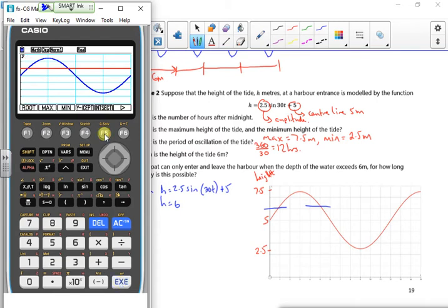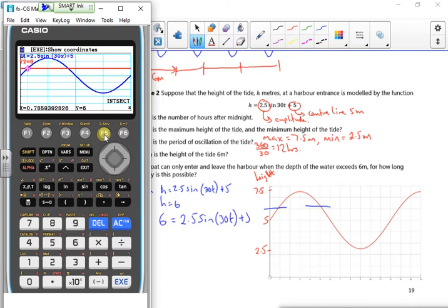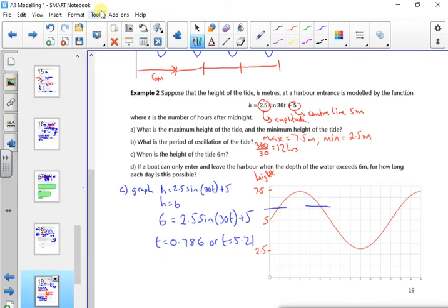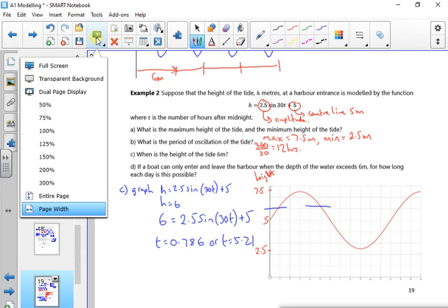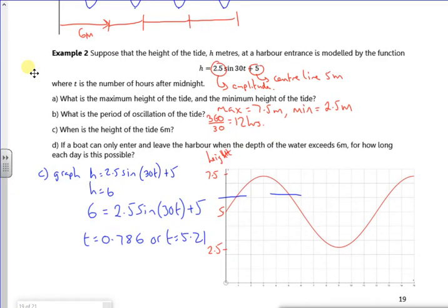And if I gsolve it, I get out. So what I want to do is write down that 6 is 2.5 sine of 30t plus 5. Then I've solved it and I've got t as 0.786 or 5.21. There. So the question says, when is the height of the tide at 6 metres? So those are the heights of the tide when it's at 6 metres.